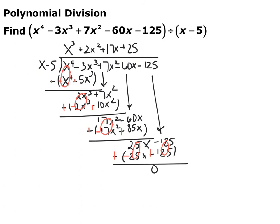Polynomial division is just like regular long division. What you're dividing by goes outside the house; what you're dividing into goes inside the house. So I put this fourth degree polynomial inside. If I were missing any terms, I would put a placeholder — so if there wasn't a 60x, I would have a plus 0x right here so that everything will line up.